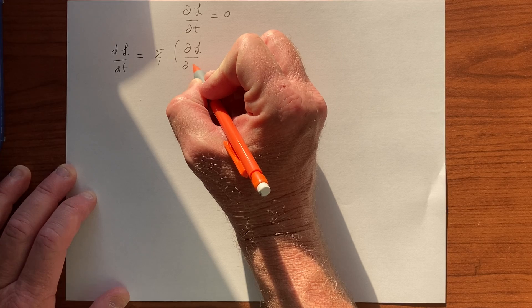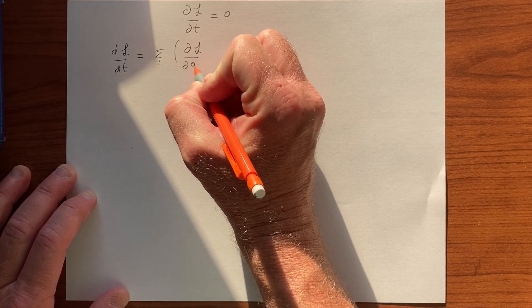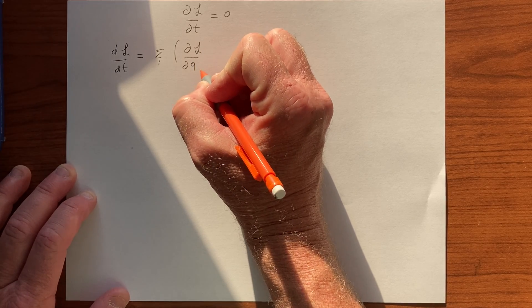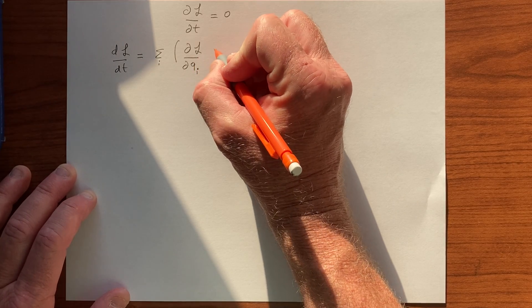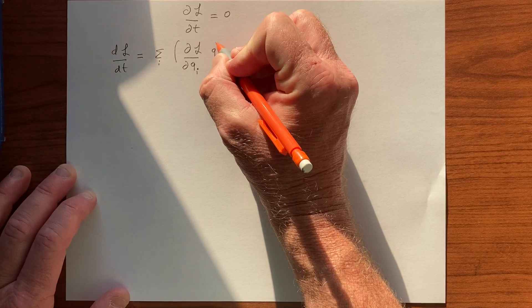So however many Qs we have, we have DL by DQi terms, and then derivatives of those Qis in time.